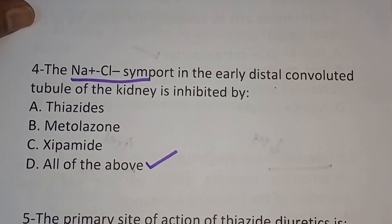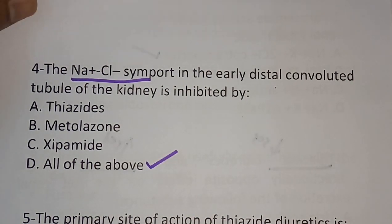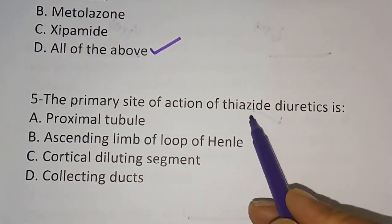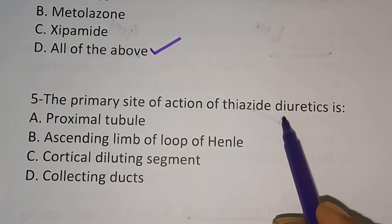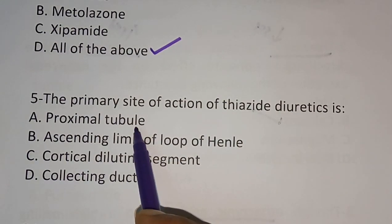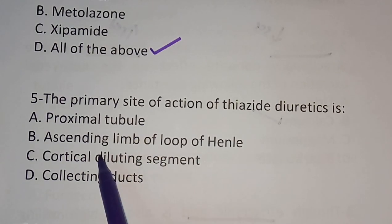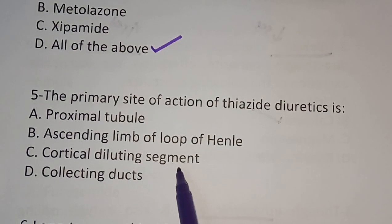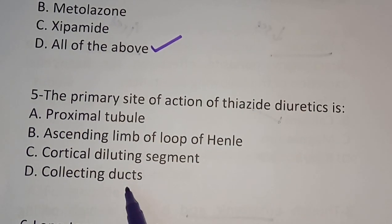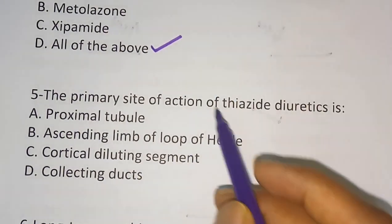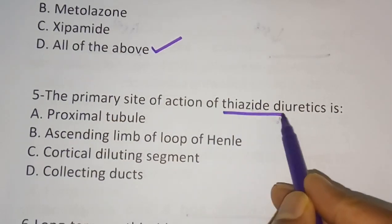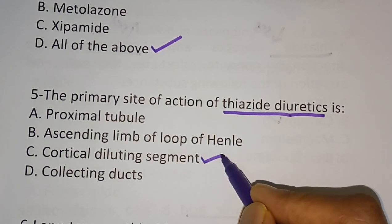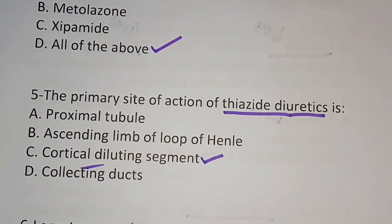Question number five: The primary site of action of thiazide diuretics is? Option A: Proximal convoluted tubule. Option B: Ascending limb of loop of Henle. Option C: Cortical diluting segment. Option D: Collecting duct. The correct answer is Option C — thiazide diuretics act at the cortical diluting segment.